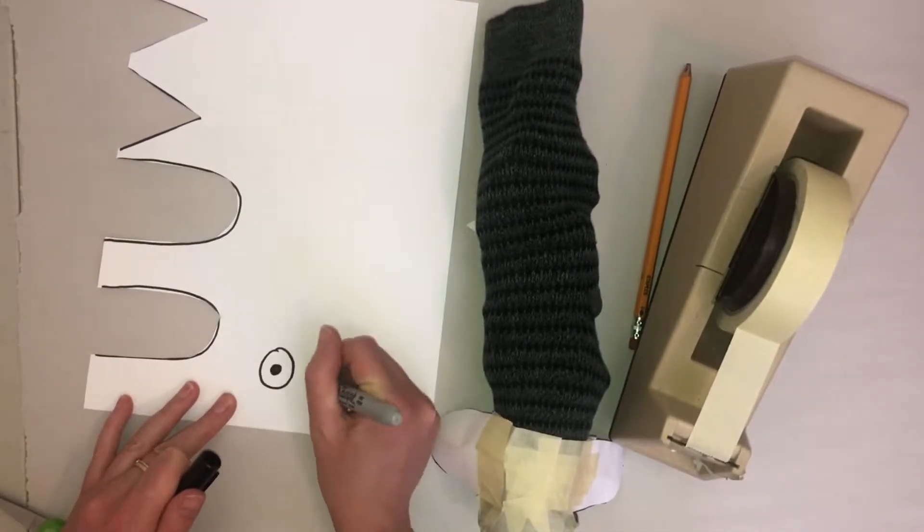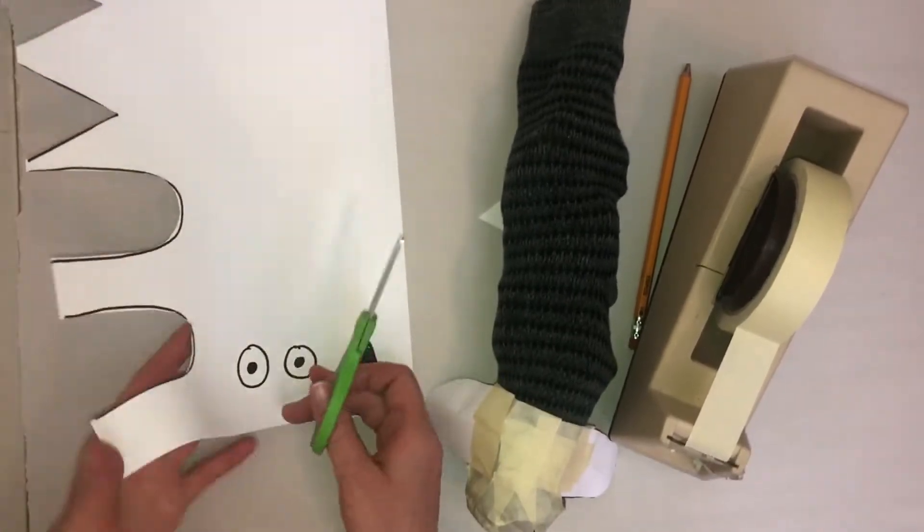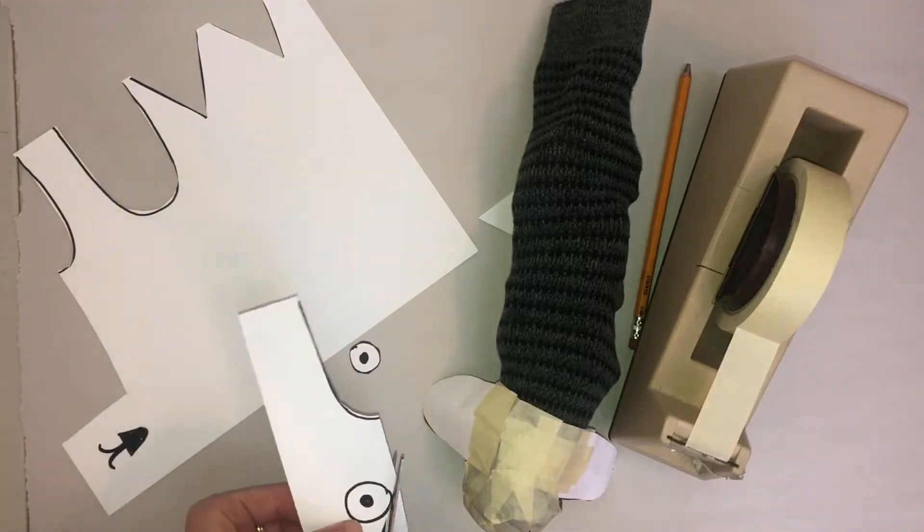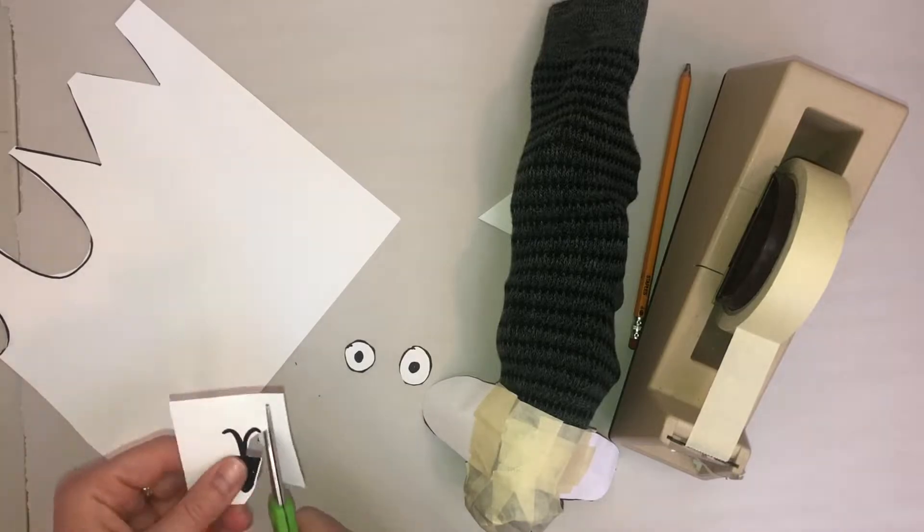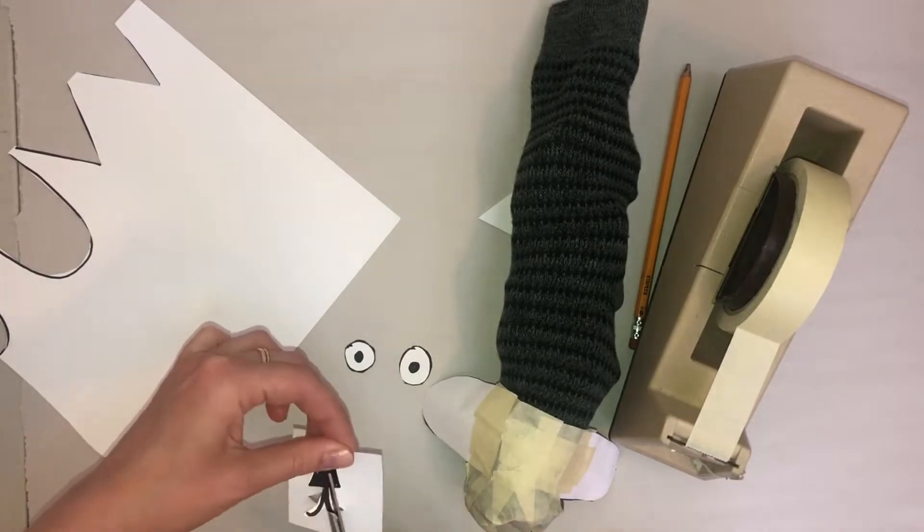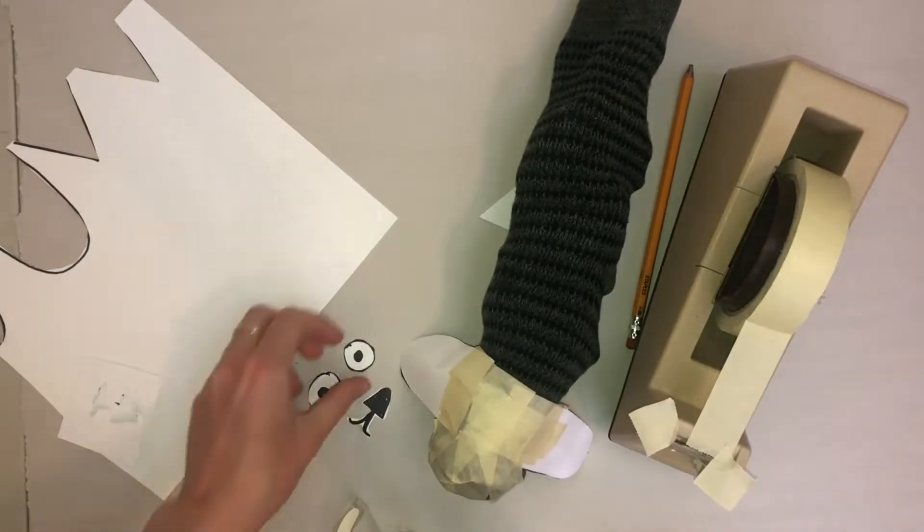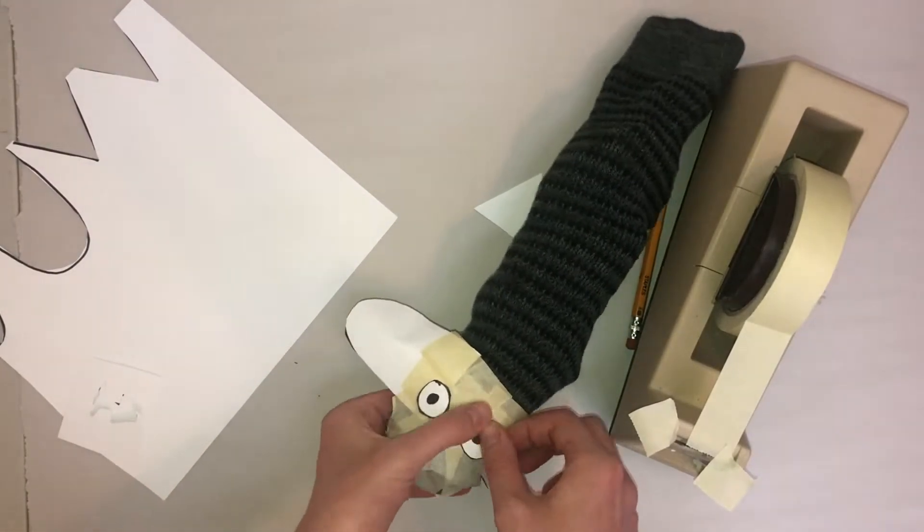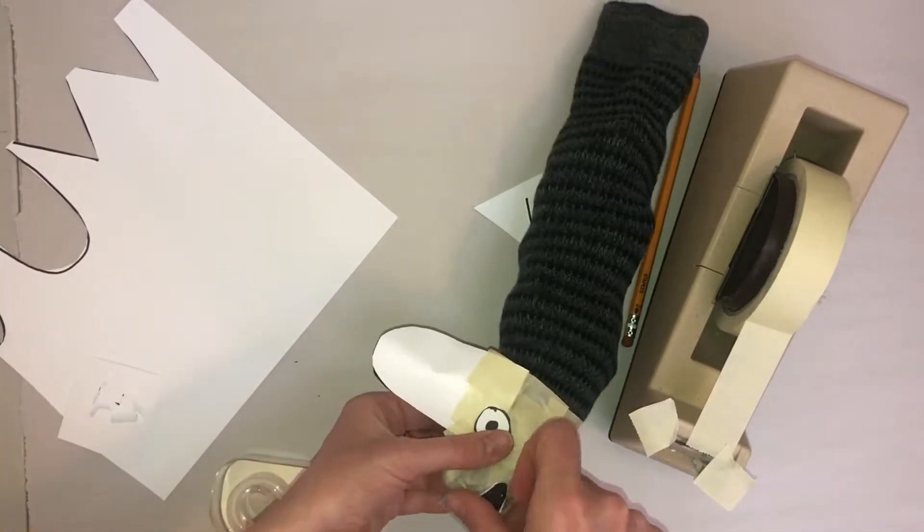Now draw your eyes and your nose. Cut them out! After you cut them out, tape them onto your head. I used clear tape so that you could see through to my eyes and nose. But if you don't have clear tape, you can use masking as well.